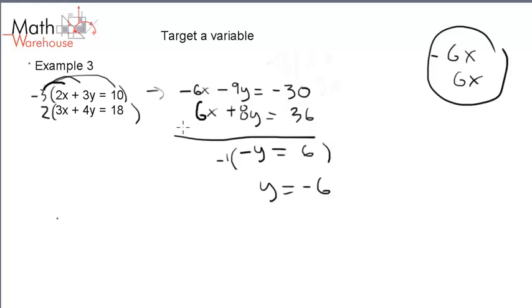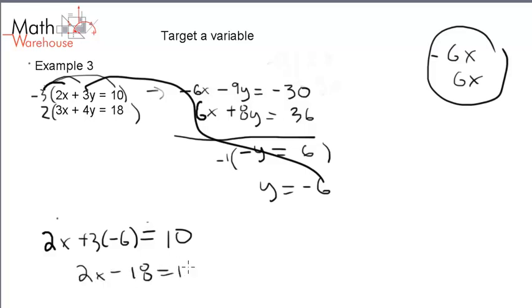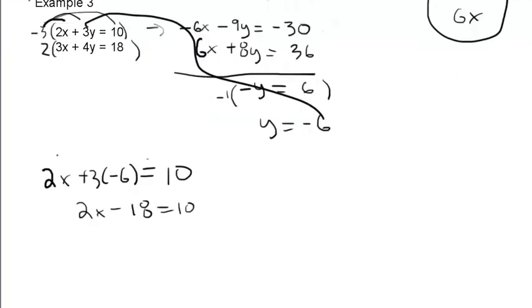Now we can take this y equals negative 6 and substitute it into either equation to solve for x. I'll use the top equation. 2x plus 3 times negative 6 equals 10. 2x minus 18 equals 10. Add 18 to both sides gives us 2x equals 28. Divide both sides by 2, x equals 14. That's our solution: x equals 14, y equals negative 6.